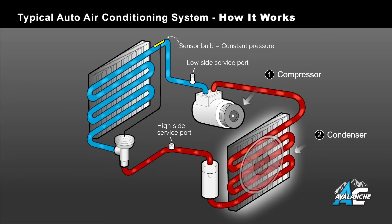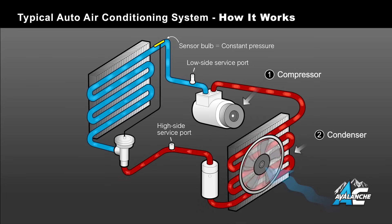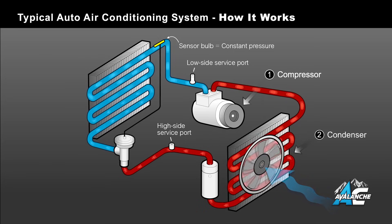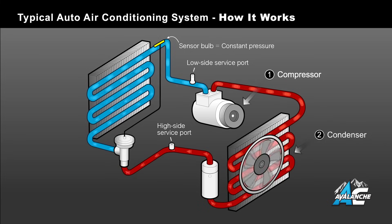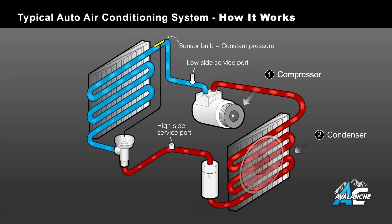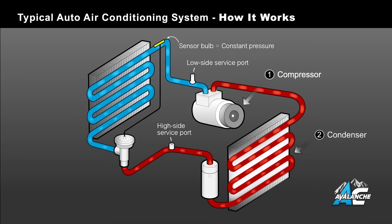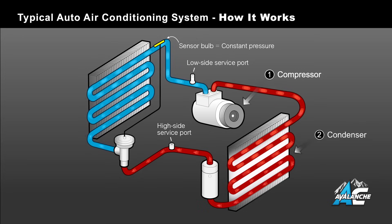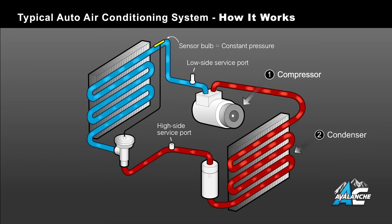The condenser does just that. Cool air flows across the condenser, cooling the high-pressure, high-temperature gas, turning it into a high-pressure liquid. As you can see, the gas remains red, high-pressure, but changes to arrows indicating it's changed to a liquid.